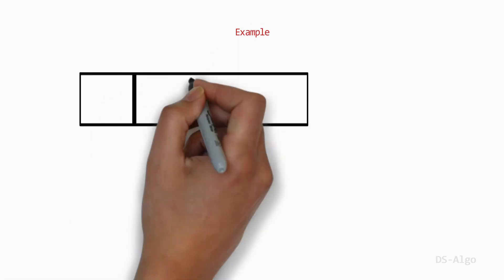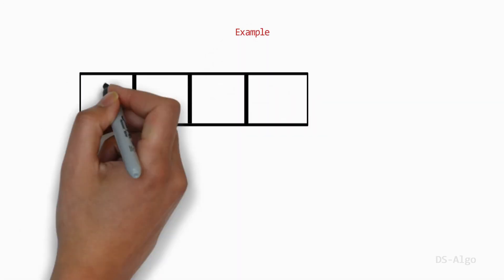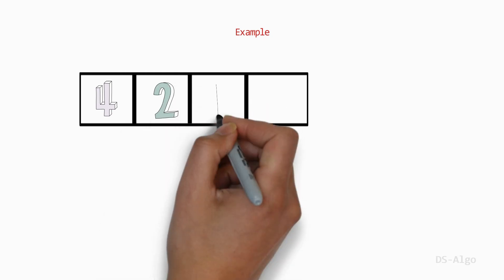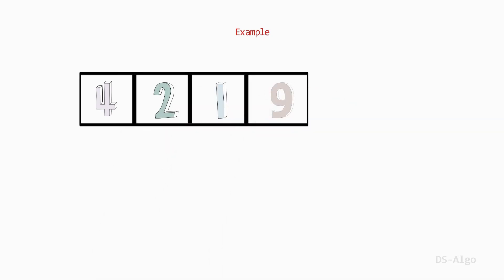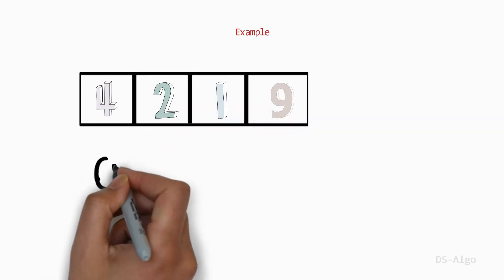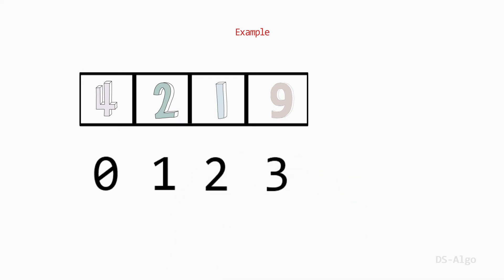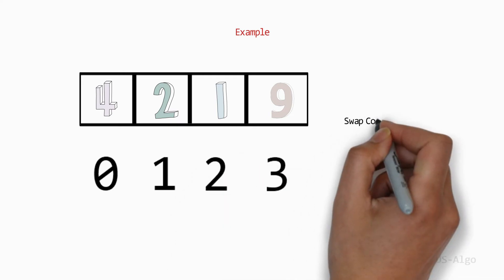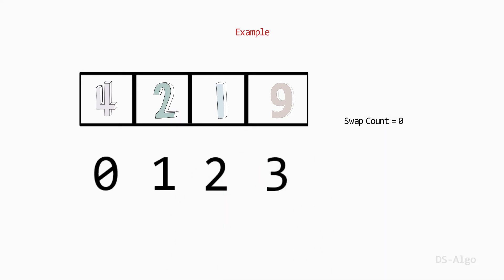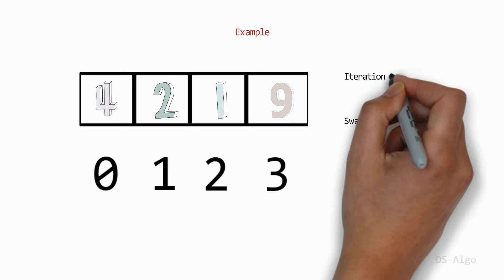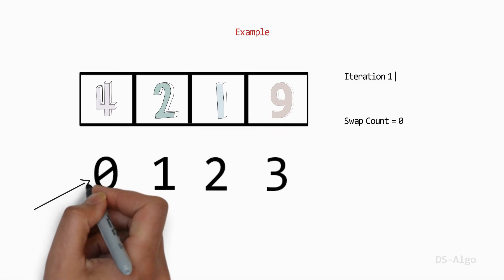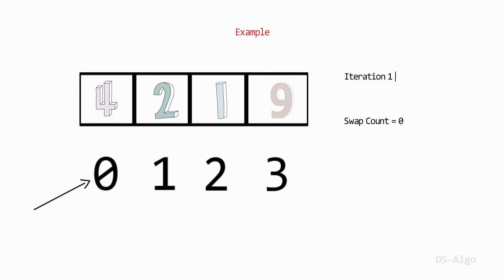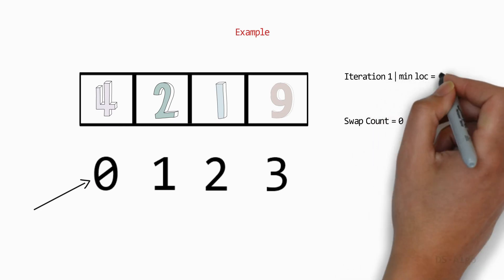As an example, let array A be [4, 2, 1, 9] with indices 0, 1, 2, 3. Initially, the swap count is 0. Let's begin with the first iteration, which starts from index 0. Therefore, we assign minLoc to 0.